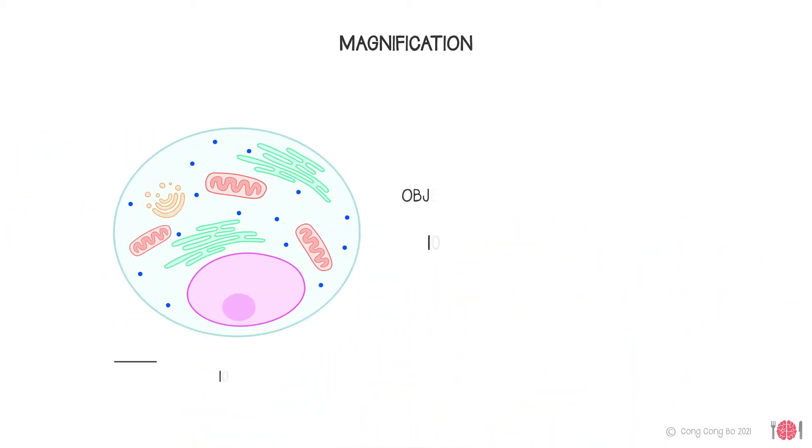For example, the image of an animal cell measuring 10 micrometers when magnified 1,500 times will be 15,000 micrometers, which is 15 millimeters.